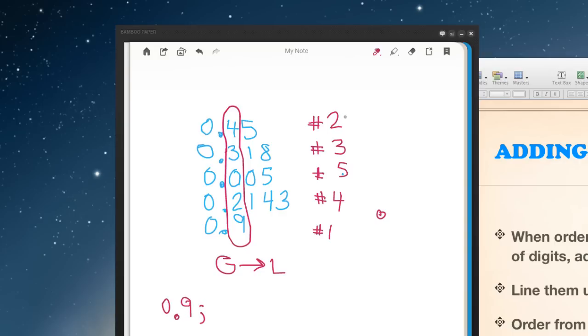So when I write these sequentially, I'm going to write them in greatest to least starting with my nine tenths. That's my greatest number. Then I'm going to go up to my number two number: forty-five hundredths. See my nice semicolons in between. My number three number is three hundred eighteen thousandths. My number four number is two thousand one hundred forty-three ten thousandths. And my number five number is five thousandths. So these are the numbers in order from greatest to least. So who won the race? Whoever ran their race in five thousandths of a second of a minute. Remember, only Dash can do that.